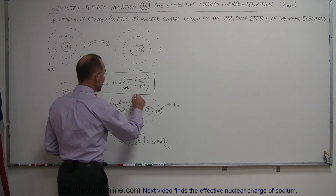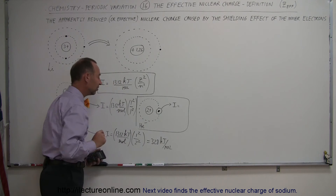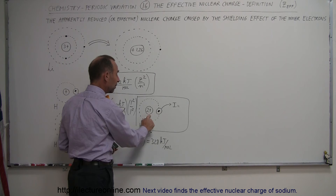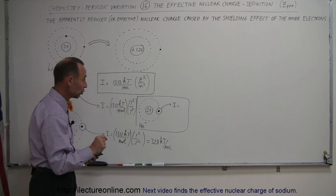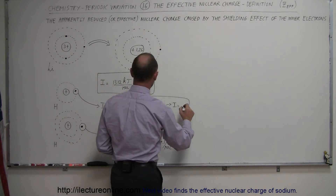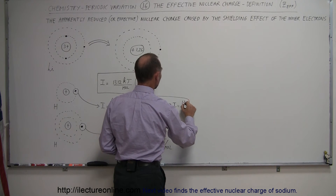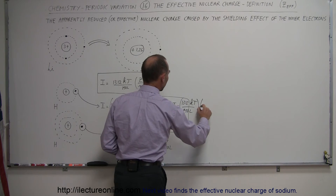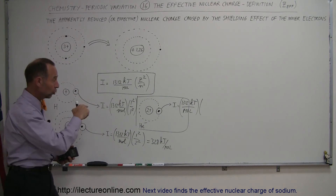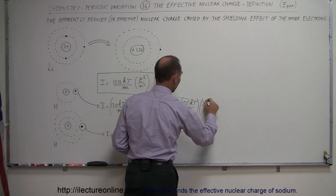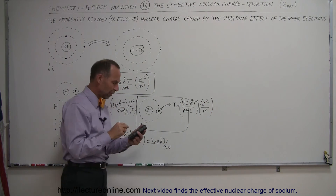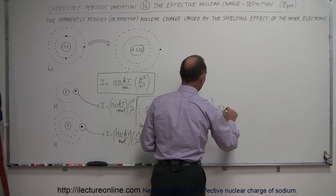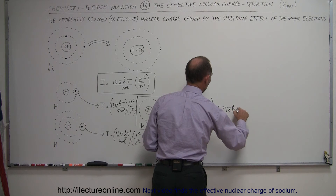For a helium ion that has already been ionized and has only one electron left in the innermost energy level, the nuclear charge is 2. Using the same equation: IE = 1312 × Z²/n² = 1312 × 2²/1² = 1312 × 4 = 5,248 kilojoules per mole.